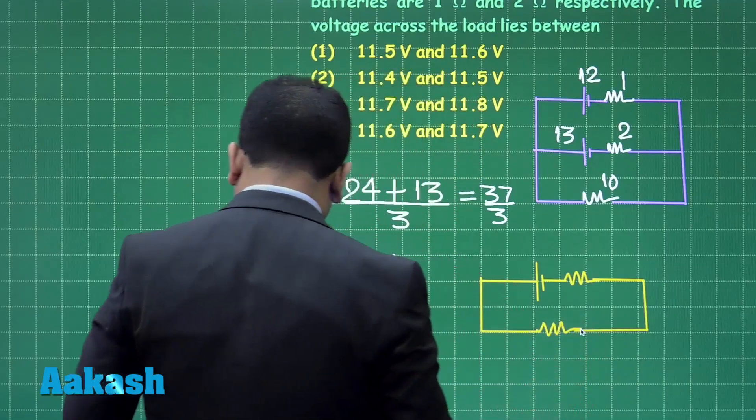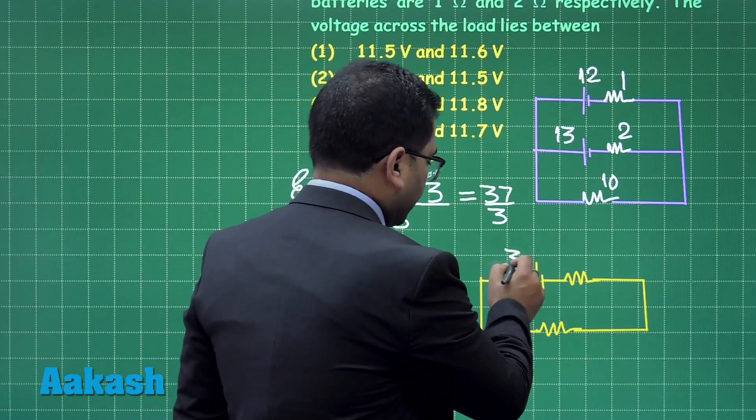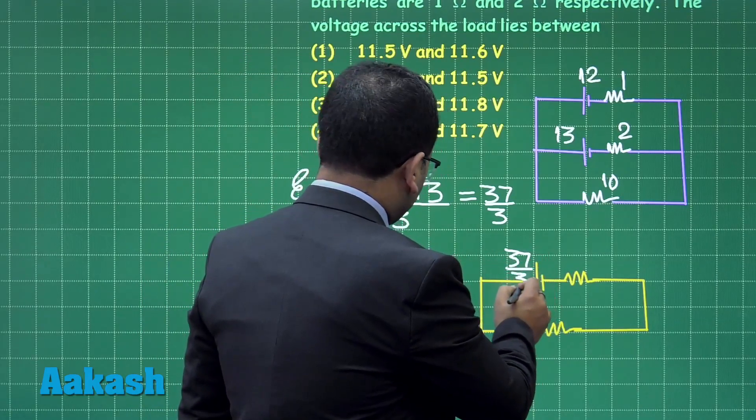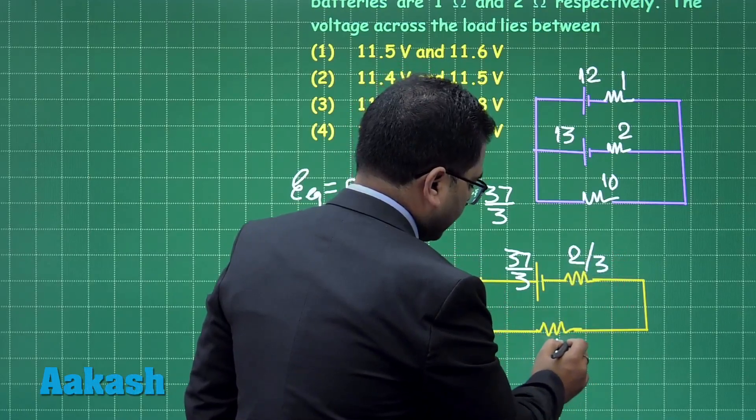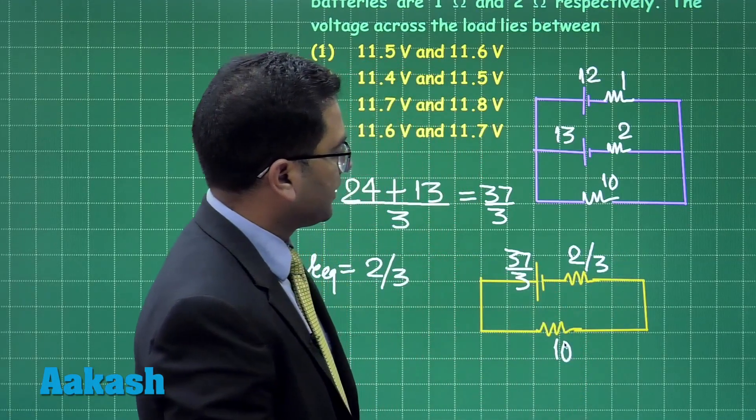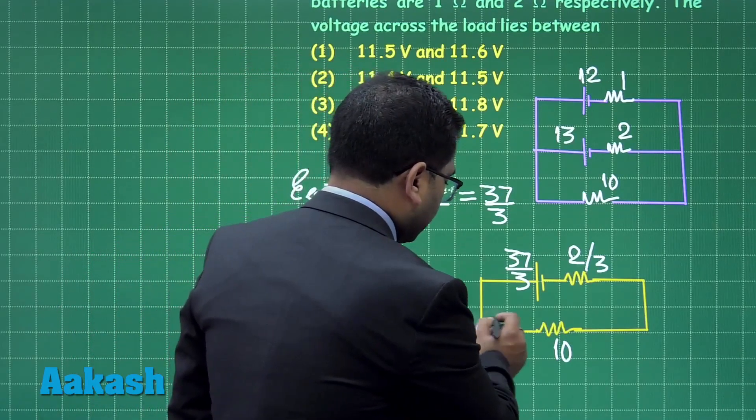Now the internal resistance has been calculated, the equivalent part, so this comes here and this comes here. Let's just write the value. E equivalent is 37 by 3, right, so that's straightforward. R equivalent is 2 by 3 and this is going to be 10.